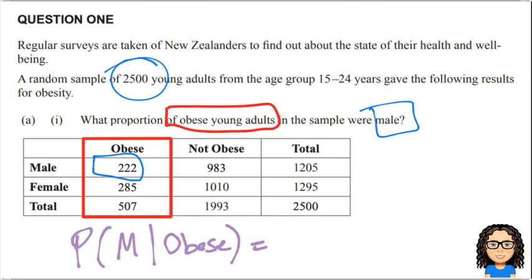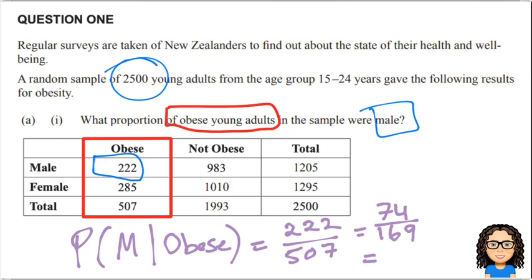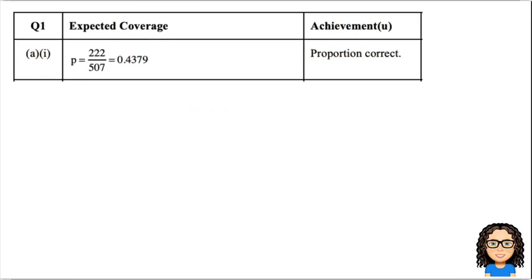The probability of that is 222 out of 507. You can leave it in that fraction form, or simplify to 74 over 169, or turn that into a decimal of 0.4379, or even a percentage of 43.79%. Any of those answers would be fine. Getting through to that answer is an achieved score.